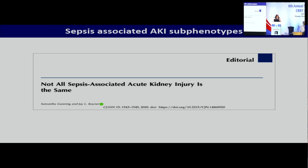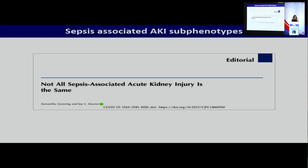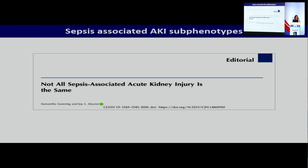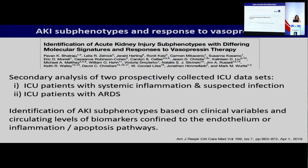If we accept that sepsis-associated AKI is the term to use, we still have to acknowledge that even all sepsis-associated acute kidney injury varies, and there are so many different phenotypes. And this may be important because different phenotypes may respond differently to therapies.